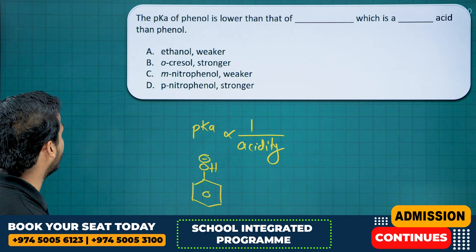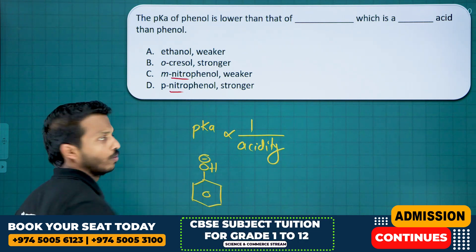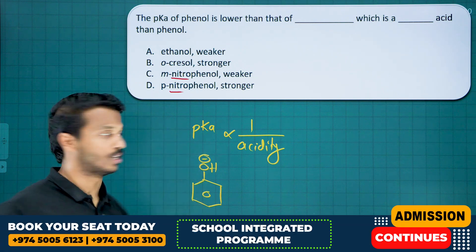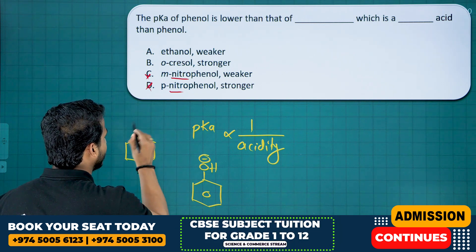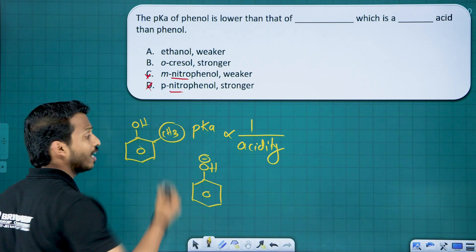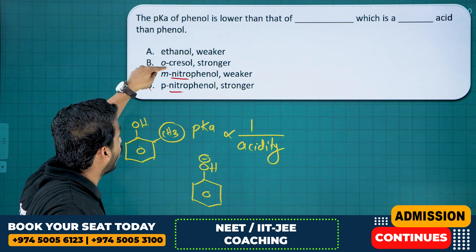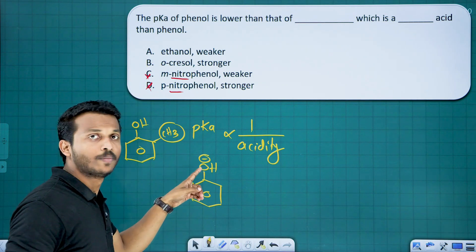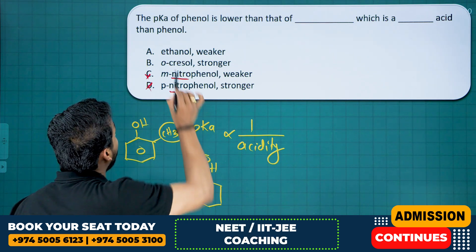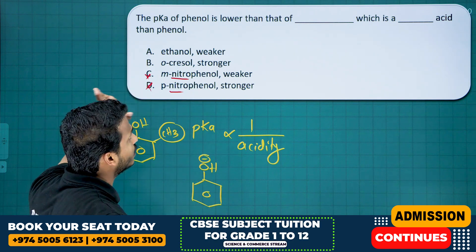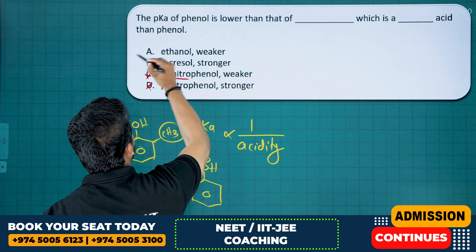Ethanol is the weaker acid and ortho-cresol is the stronger one. You know nitro group is an electron-withdrawing group — withdrawing groups make compounds more acidic, so not options C and D. Ortho-cresol means the compound has OH and CH3. Alkyl groups decrease acidity. So ethanol and ortho-cresol are both less acidic than phenol. Ethanol, being a weaker acid, has a higher pKa value. That's only option A.